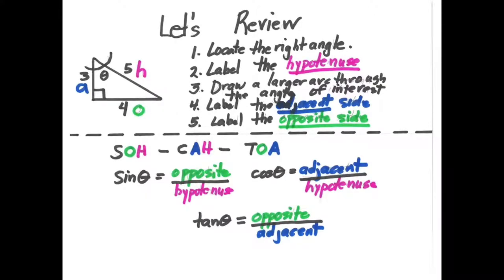First, let's review what we've learned already. The foolproof way of determining which side is which is to locate the right angle, label the hypotenuse, draw a larger arc through the angle of interest, label the adjacent side, and lastly label the opposite side. We also want to remember SOH-CAH-TOA: sine of an angle is the ratio of opposite divided by hypotenuse, cosine is the ratio of adjacent divided by hypotenuse, and tangent is the opposite side divided by the adjacent.